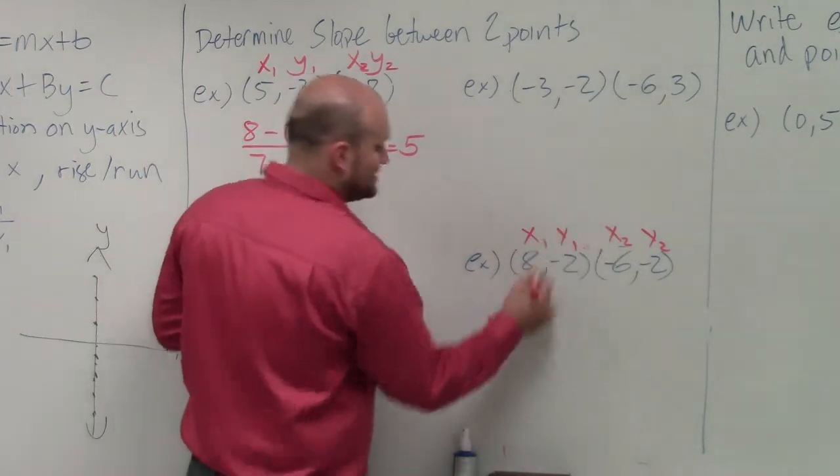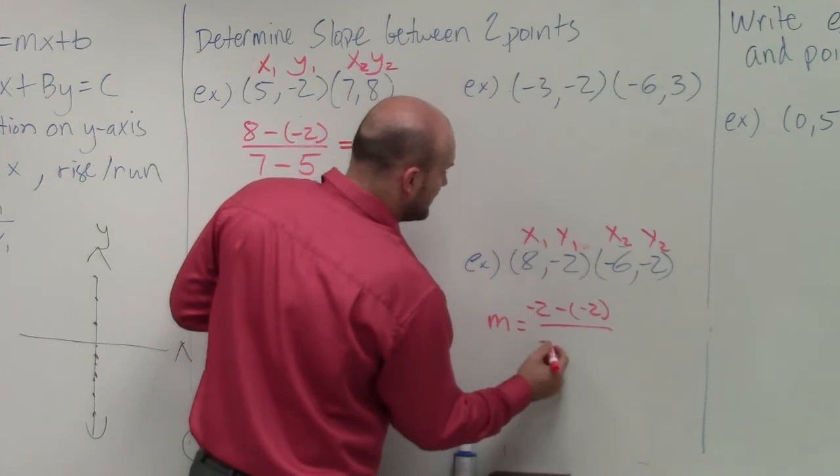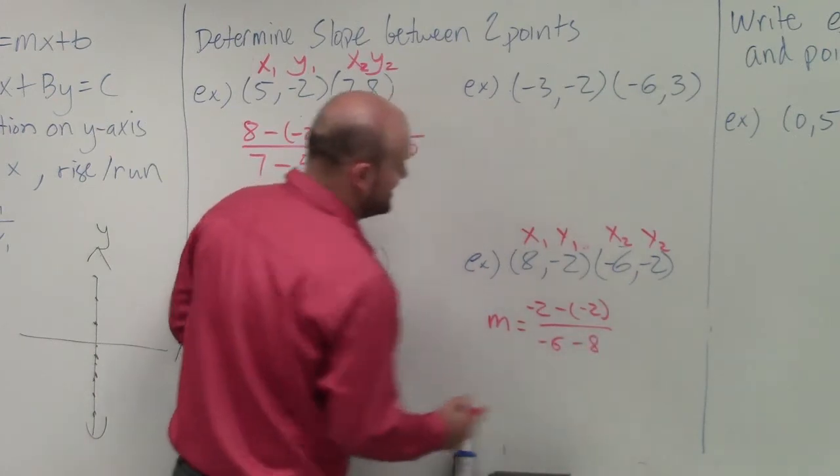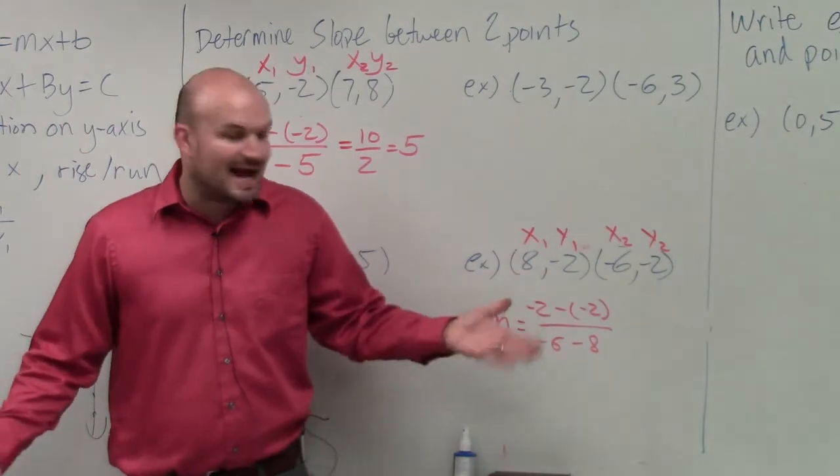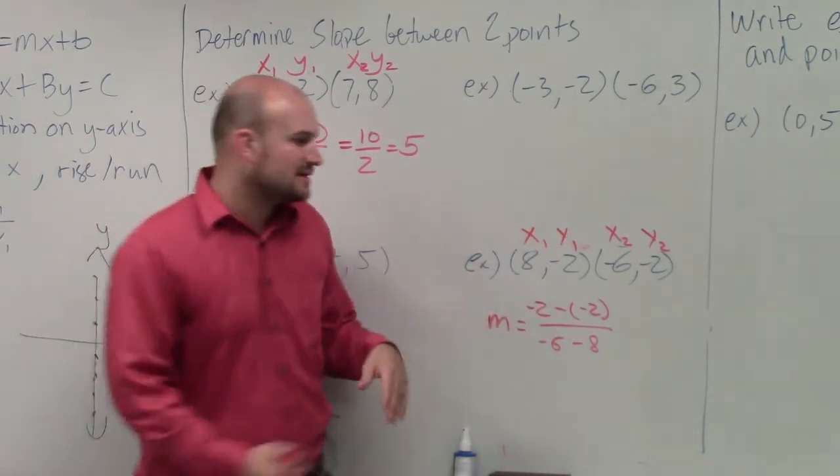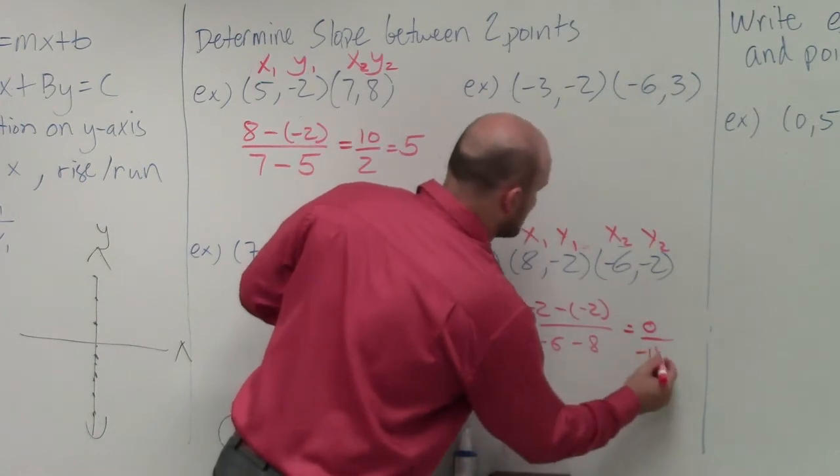So in this case, I have negative 2 minus negative 2 all over negative 6 minus 8. Well now, this is negative 2 minus a negative. That's like adding. So negative 2 plus 2 is going to give me 0 over negative 14.